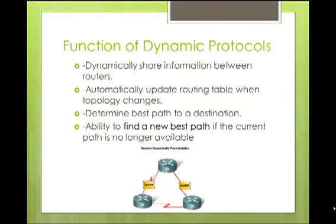The function of dynamic routing protocols is to share information between routers. With a dynamic routing protocol, routers will exchange information with each other about the routes that they know and the routes that they have directly connected, to build the routing table. You, as the administrator, do not have to enter in the static routes when you select a dynamic routing protocol such as RIP. They will automatically update the routing table when the topology changes, determine the best path to the destination, and find a new best path if the current path is no longer available.